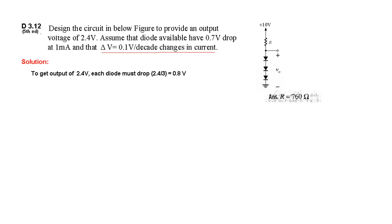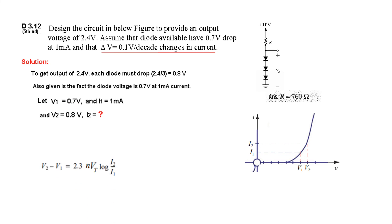Now you can see there are two voltages: 0.7 volt at 1 mA and 0.8 volt at unknown mA. So we can say that V1 is 0.7 volt and I1 is 1 mA. This is given. And V2 is 0.8 volt, but I2 we don't know. To calculate this, we will use the formula. We plug in the values: 0.8, 0.7, 2.3, and Vt is 25 mV log I2 over I1. From here we get 0.1 equals these terms.